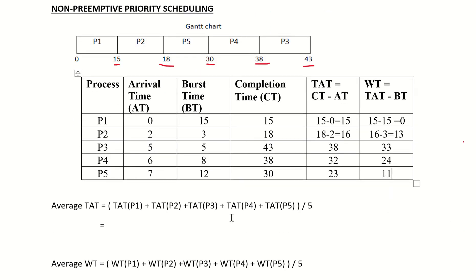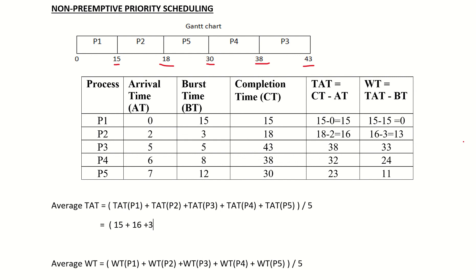Now we have all the waiting times and turnaround times. Average turnaround time equals the sum of all turnaround times divided by 5. That is 15 plus 16 plus 38 plus 32 plus 23, divided by 5, which equals 124 divided by 5, giving us 24.8.